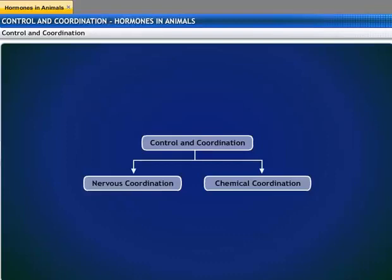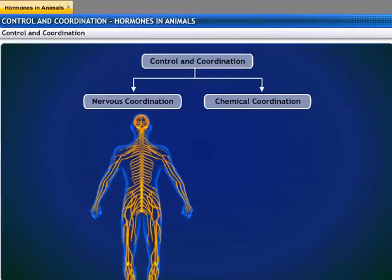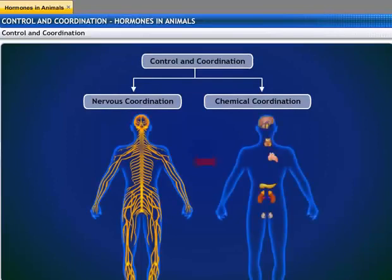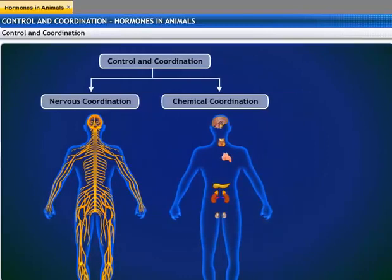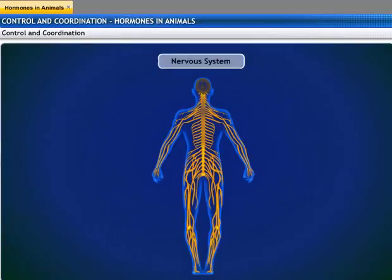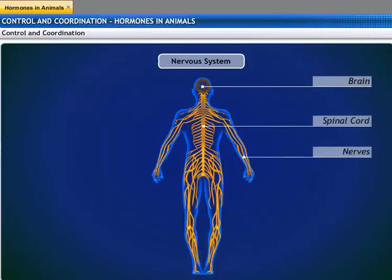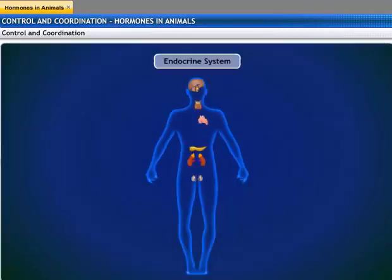The animal body has two levels of control and coordination: nervous coordination and chemical coordination. The nervous system and the endocrine system act in a coordinated manner for the proper regulation of body activities. The nervous system consists of the brain, the spinal cord, and the nerves. The endocrine system consists of glands and hormones.